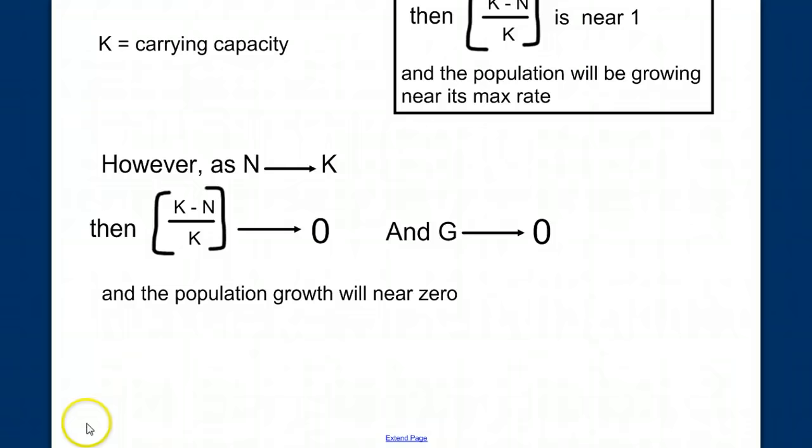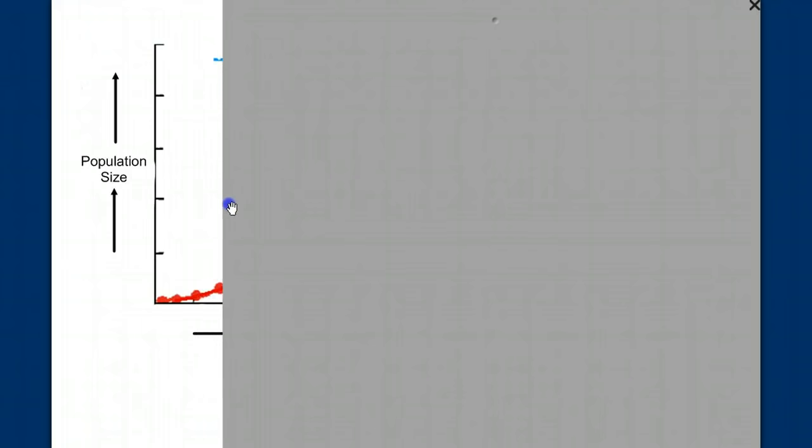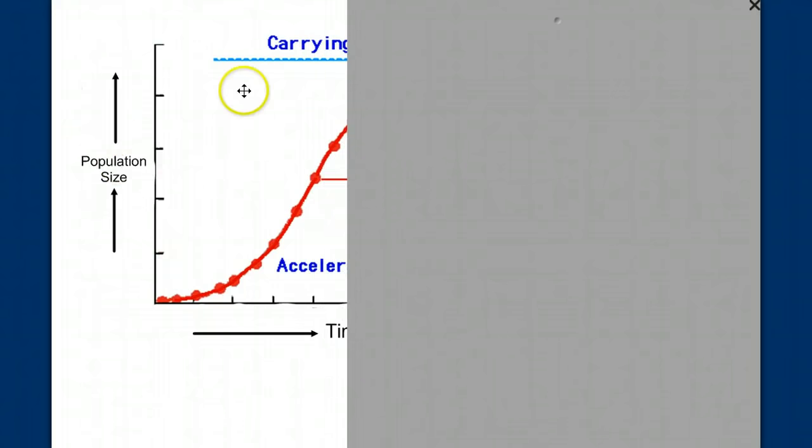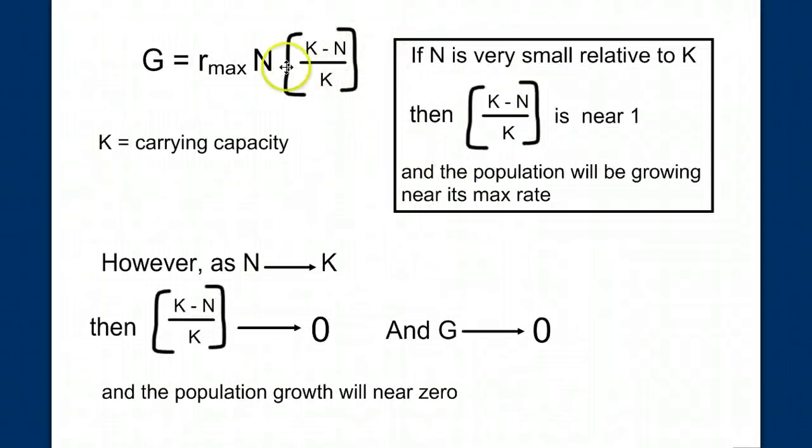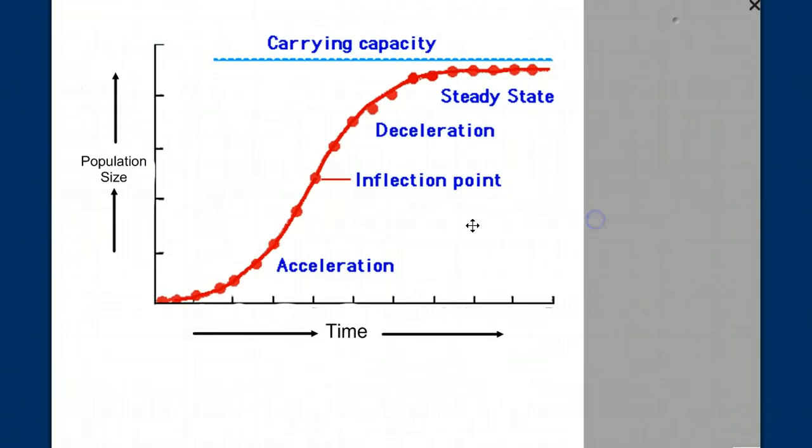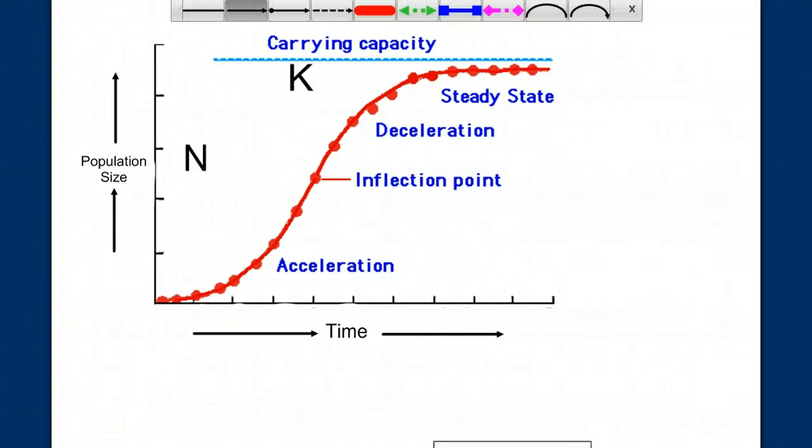We need to look at it graphically. When a population starts out growing, it will grow small at first. And it will start to accelerate, creating a graph that we saw before. But at some point, as n, the population size, approaches K, the carrying capacity, the rate of growth is going to decrease as this factor nears 0. And eventually, it will become 0, and we'll have a 0 rate of growth. And we'll get a graph that looks like this, an S-shaped curve, or a logistic curve. Once again, as n approaches K, growth rate approaches 0.